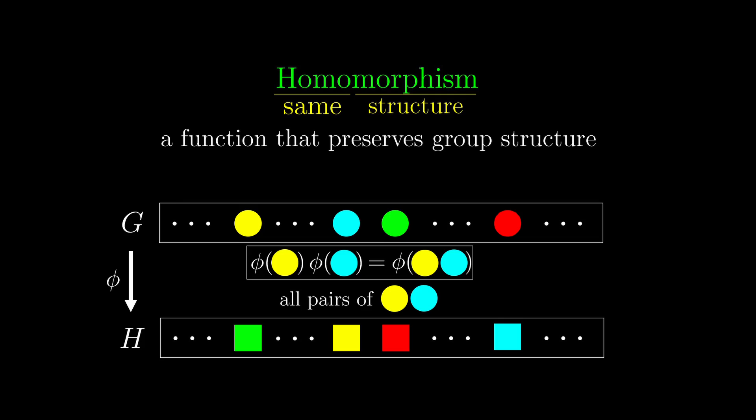This is what you will see in a textbook, of course with symbols, not these circles. Now this function phi preserves group structure in the sense that all the compositions of symmetries remain intact through this map.